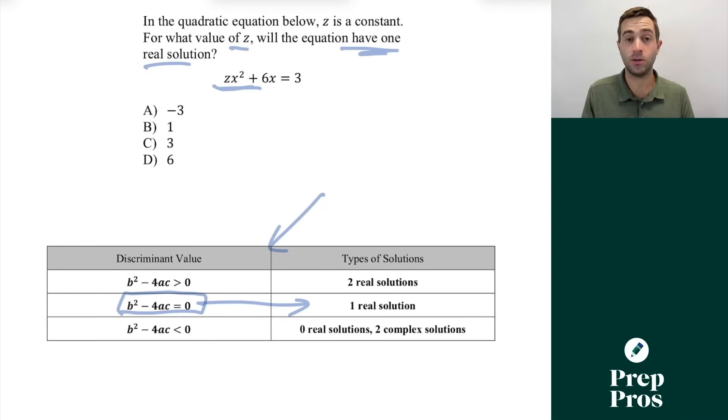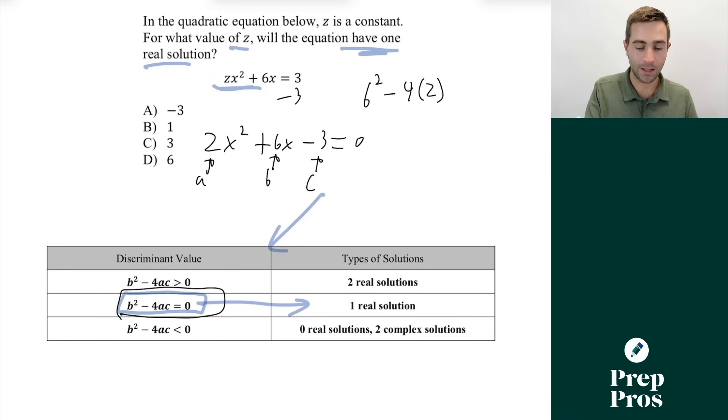So the first thing we need to do is it always needs to be an ax squared plus bx plus c form. So we need to subtract over the 3. When we do that, we'll get zx squared plus 6x minus 3 is equal to 0. So our a value is z, our b value is 6, and our c value is negative 3. Now it's as simple as punching this into our formula. So we're going to get b squared, which is going to be 6 squared minus 4 times z times negative 3. And we're going to set that equal to 0. And as we solve through for that, we'll get our correct answer here of a.